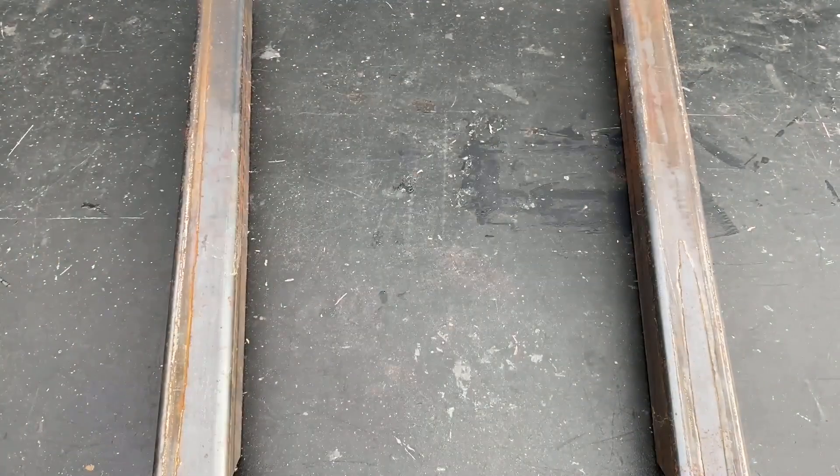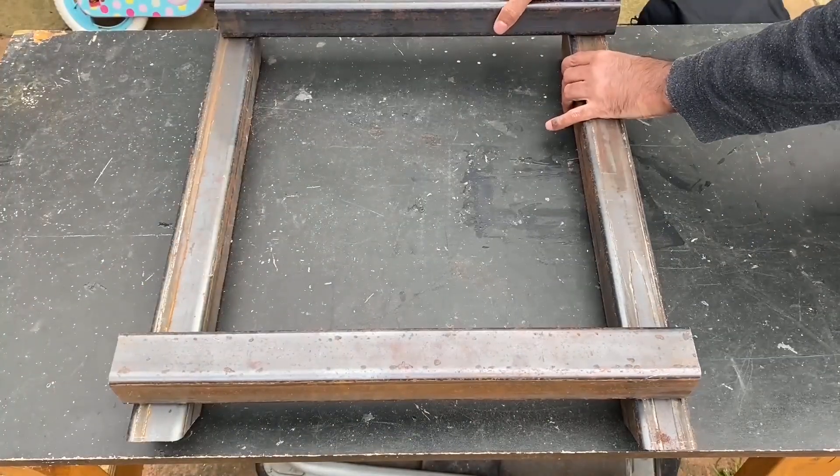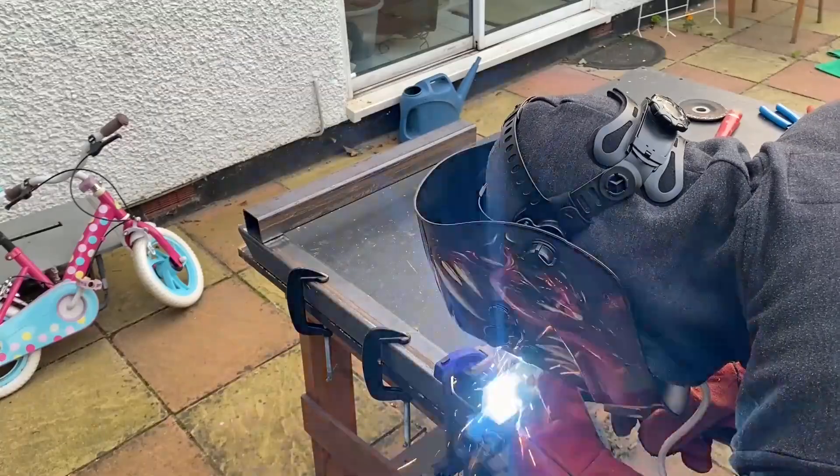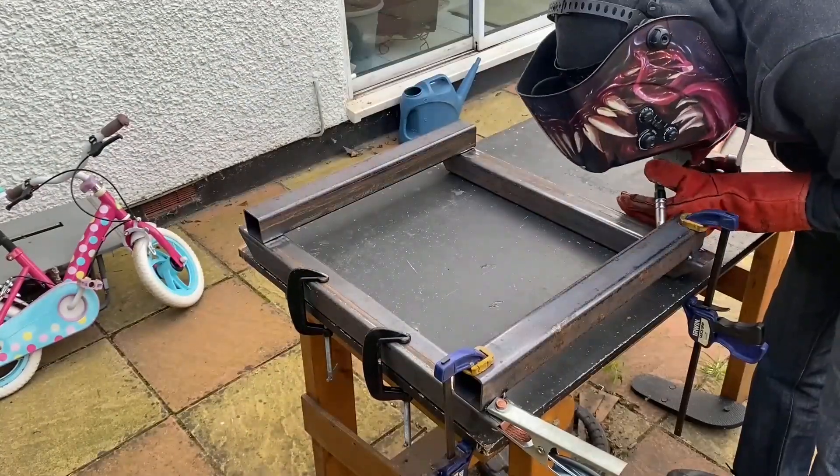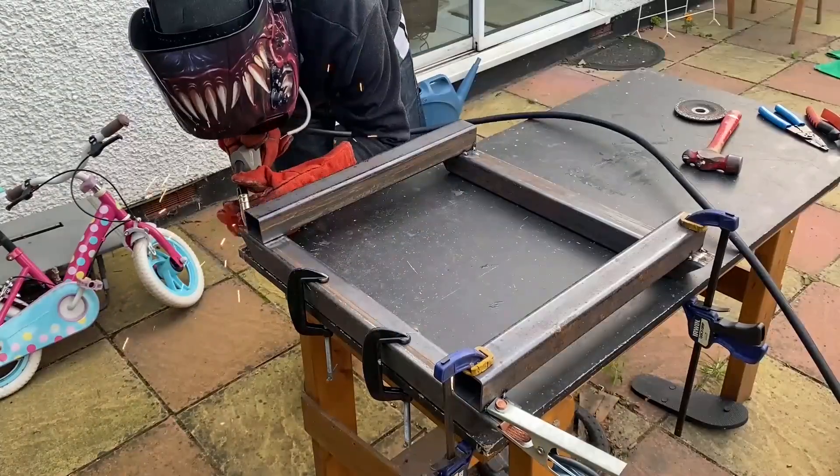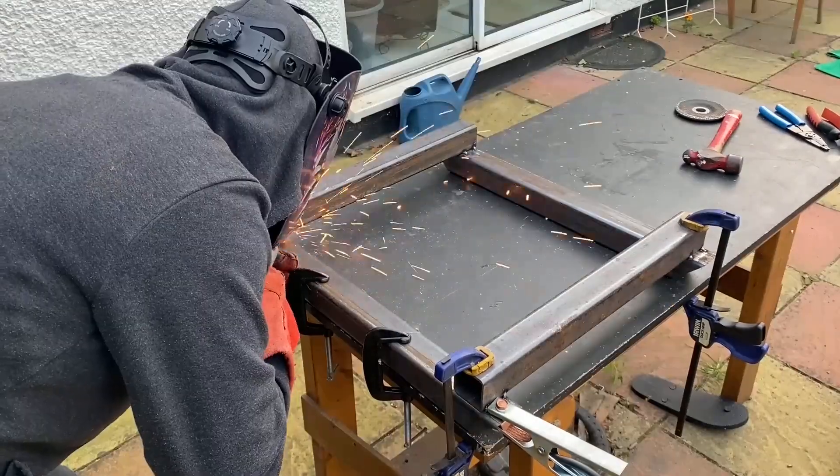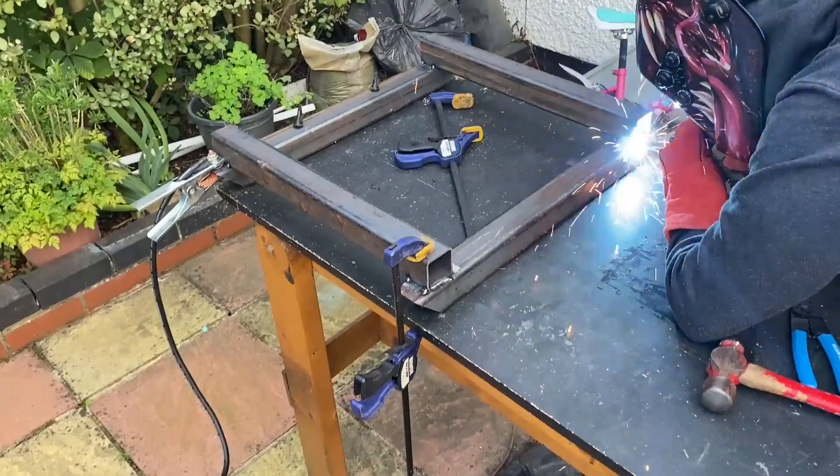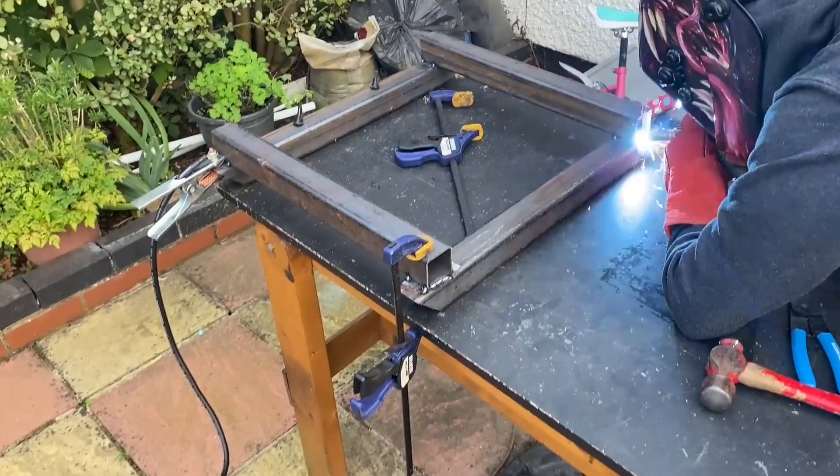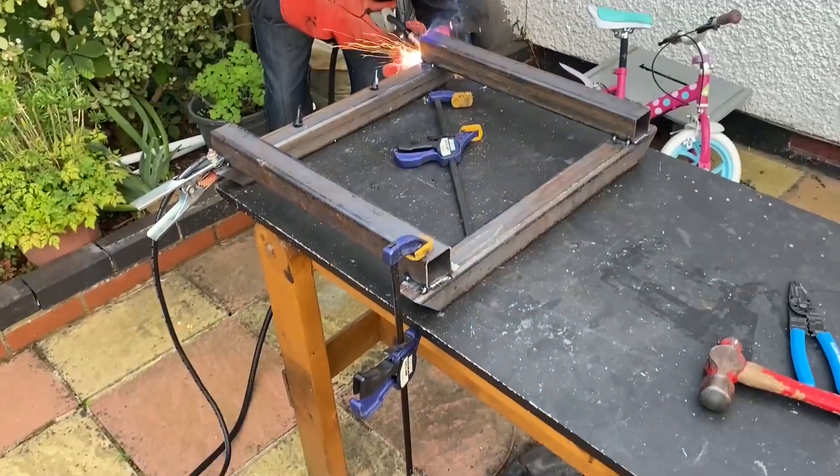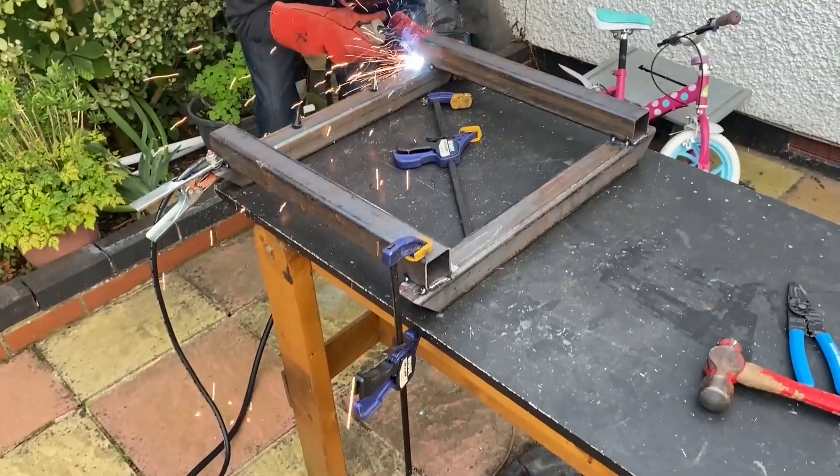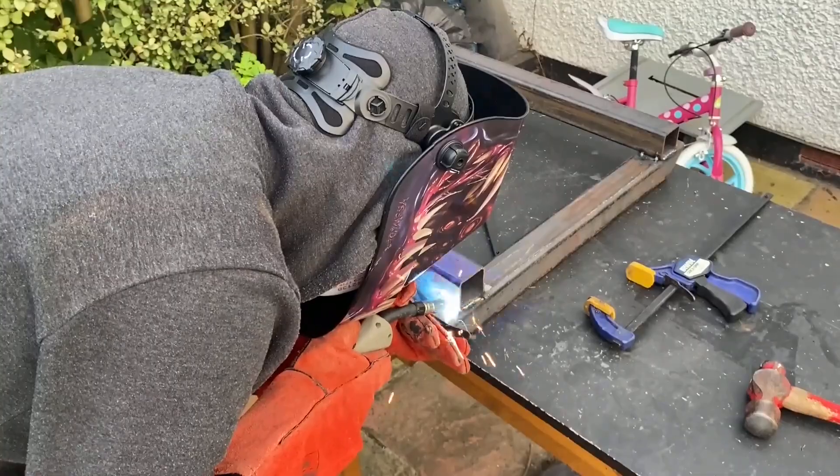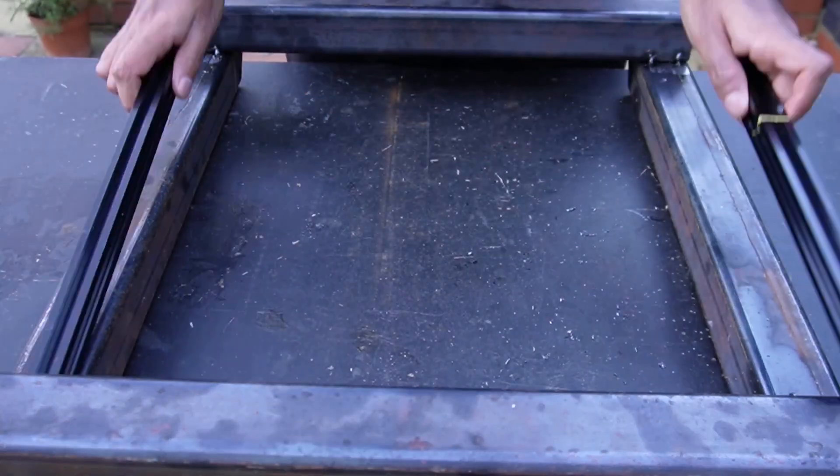The final part of this project was to make a base stand for the machine. This could be done in a number of different ways. I had some old steel tubing lying around, so I welded up a frame together.